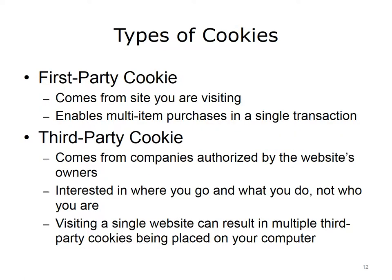Some people don't mind having their online activities tracked; others view it as an invasion of privacy. Users who do not want their actions tracked should not allow first-party cookies on their computers. A first-party cookie is created by the website you are visiting and can be handy — for example, allowing you to purchase multiple items in one transaction. A third-party cookie is placed on your computer by companies authorized by the website owner and is often used to track your clicks and gather marketing data. Some experts recommend accepting first-party cookies, rejecting third-party cookies, and allowing session cookies, which are erased when you close your browser and are not used to track your online activities.